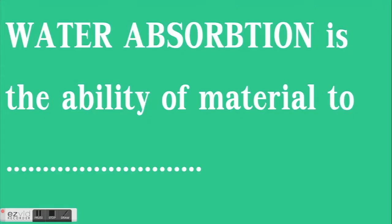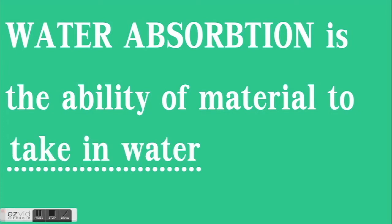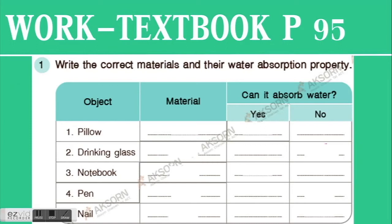Do you remember what water absorption is? Water absorption is the ability of a material to take in water. On page 95, we wrote the correct materials and their water absorption properties. A pillow — do you remember the material it's made of? It's cloth. Tell me: does it absorb water or not? Yes, that's right — cloth absorbs water.